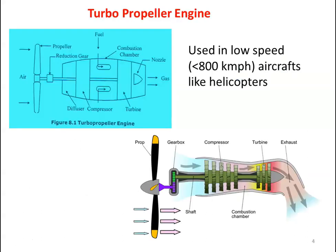The first type of aircraft propulsion engine is the turbo propeller engine, which is used for low speed applications — less than 800 kilometers per hour — such as helicopters. Look at the diagram: there are two diagrams given for the turbo propeller engine — a line diagram and a cross-sectional diagram.